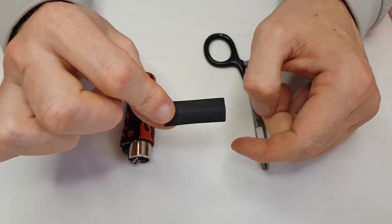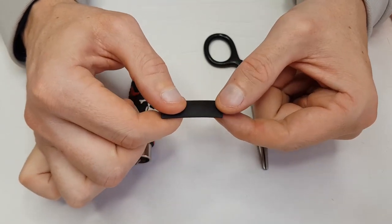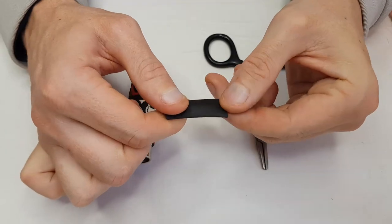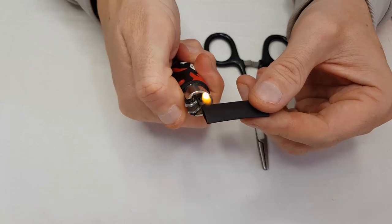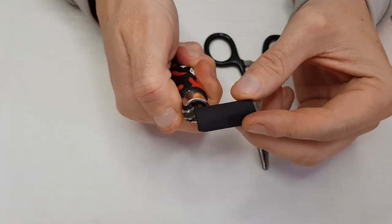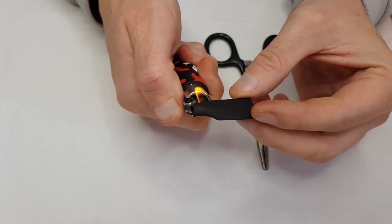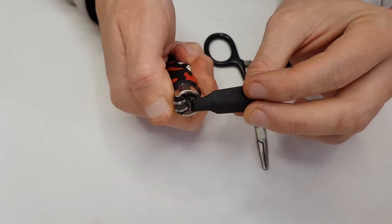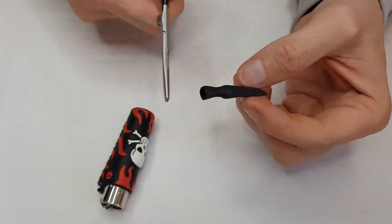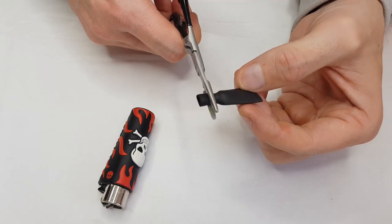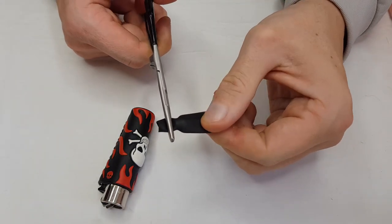This side here I'm going to pinch close with the forceps once I've heated it up. The longer side is going to be the lashing point which will attach to the hook shank. Take a lighter and lightly apply the flame to the one side of the rattle and the shrink tube so it heats up around the rattle. I will then take my forceps and pinch that one side entirely closed.